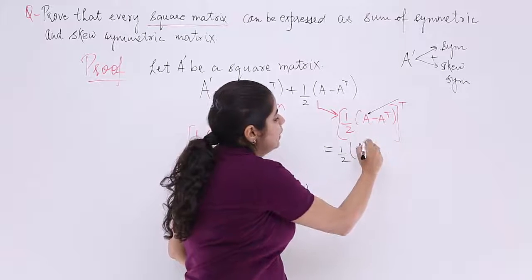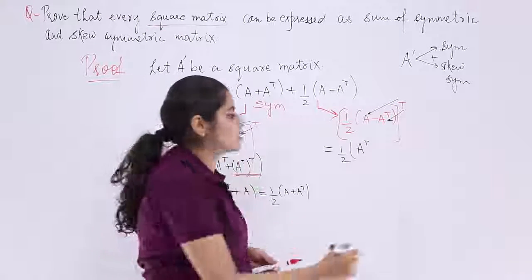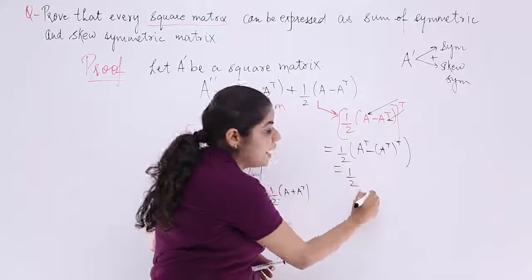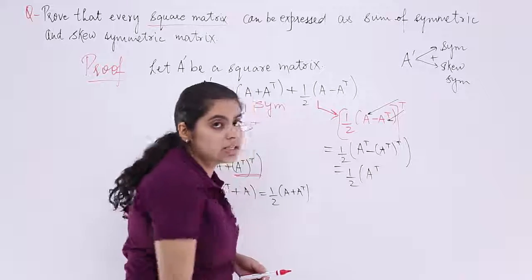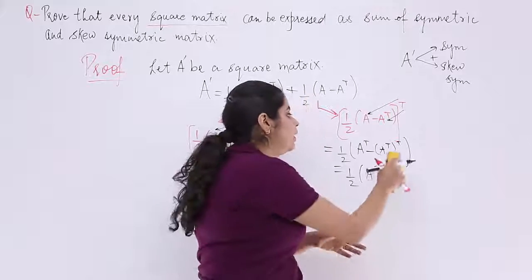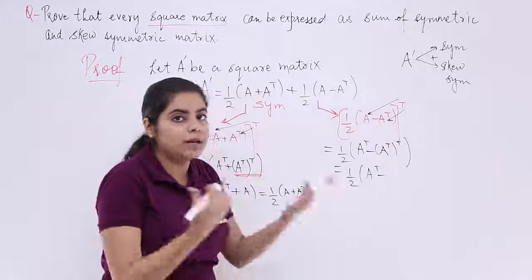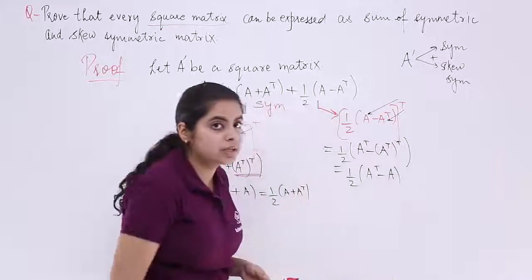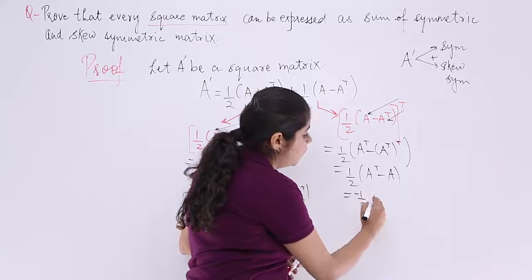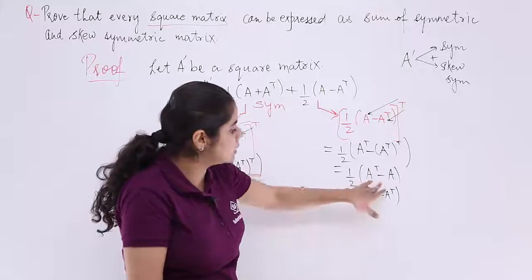The transpose goes inside: A becomes Aᵀ, and (Aᵀ)ᵀ becomes A again. So we have half into (Aᵀ − A). Taking minus sign common, this becomes minus half into (A − Aᵀ).